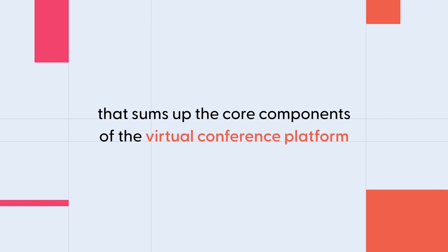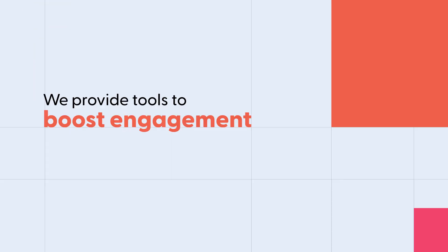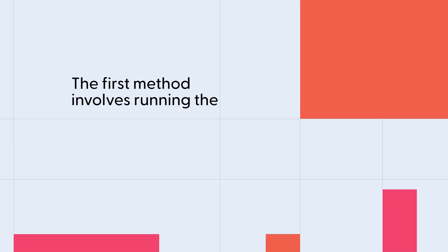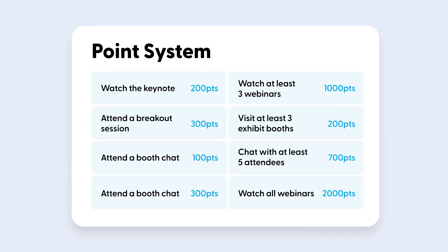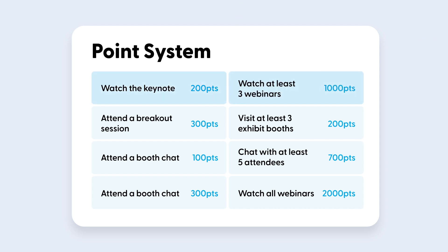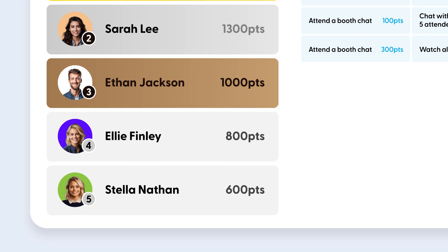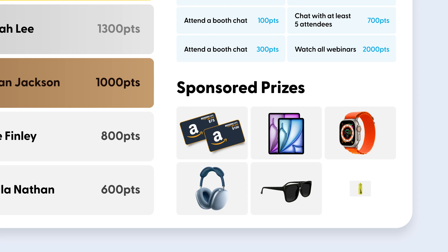That sums up the core components of the virtual conference platform. We provide tools to boost engagement at your event through different gamification mechanisms. The first method involves running live leaderboards. A leaderboard allows you to grant virtual points to users for carrying out certain activities — for example, you might want to give points to users who register early or attend a certain keynote session. The leaderboard is visible to all users and they can see where they rank at all times. Then it's up to you as an event organizer to decide how you want to reward them — you can give away different prizes like Amazon gift cards, iPads, Apple Watches, you name it.